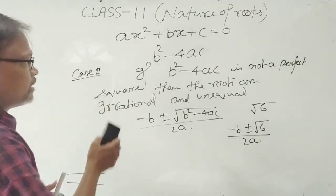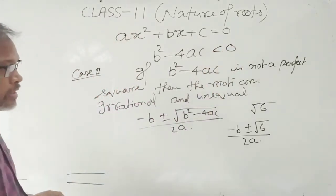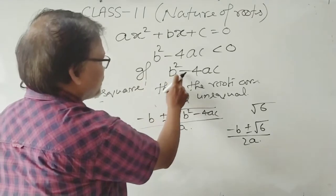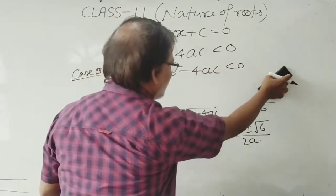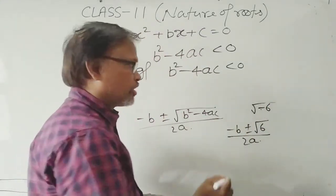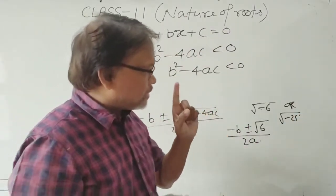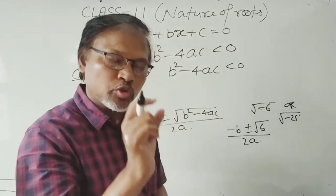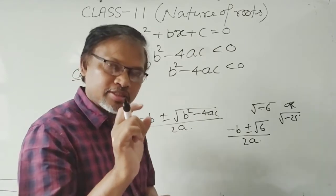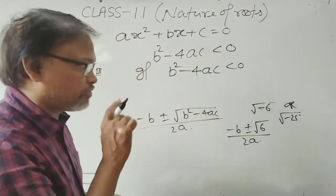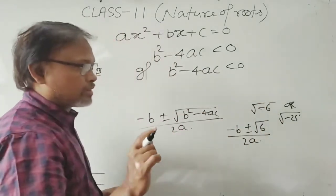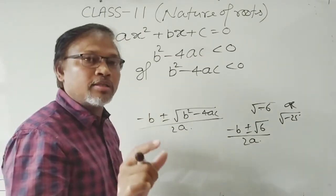Now the third case: if B² - 4AC < 0, it means you will not get a number which is rational or irrational. For example, if you get −6 or even −25 inside the square root, a negative sign inside the square root is meaningless — you cannot determine the value. So you can only imagine it, and this type of number is called an imaginary number, as I explained in the previous chapter on complex numbers. This type of root is called a complex root or imaginary root.